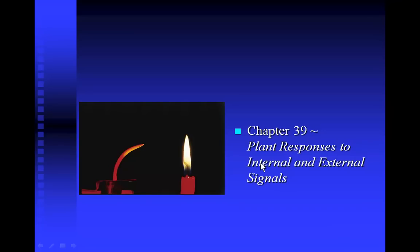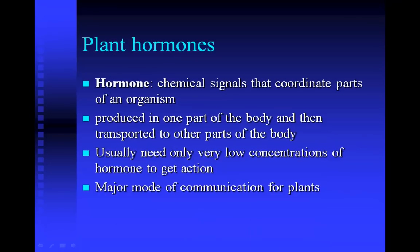Hi, this is Ms. Wirth, and today we're going to learn about plant hormones. What is a hormone? If you took physiology, you probably learned that a hormone is some kind of chemical that is produced in one part of the body and has an effect in one or more other parts of the body. Hormones usually are very effective chemicals, meaning they only need to be present in very small concentrations to have an effect. And since plants don't have a nervous system, hormones are the major way that plant tissues communicate with each other.